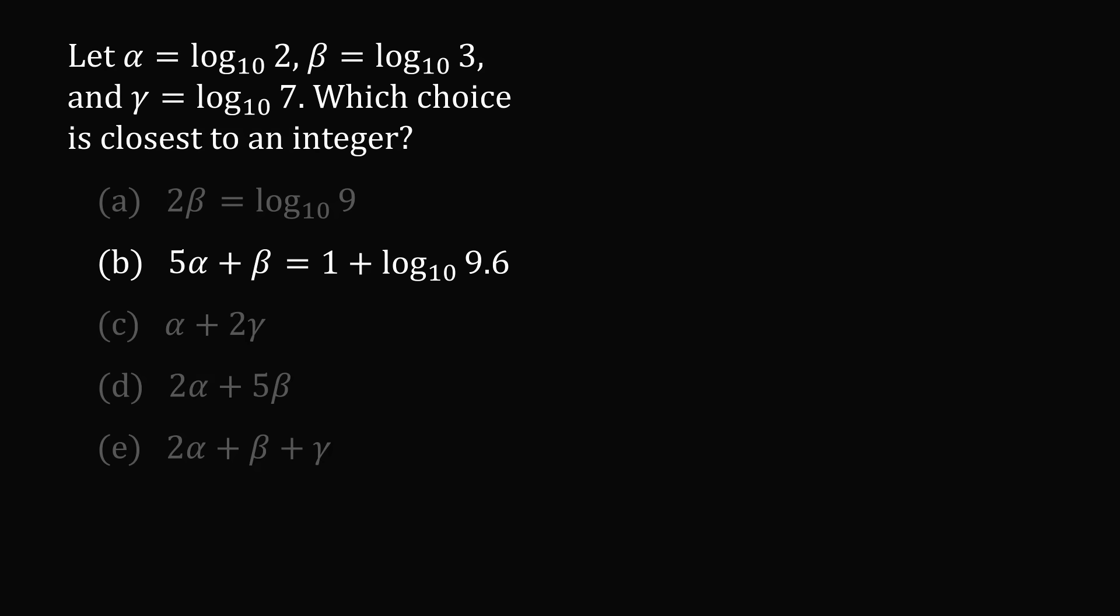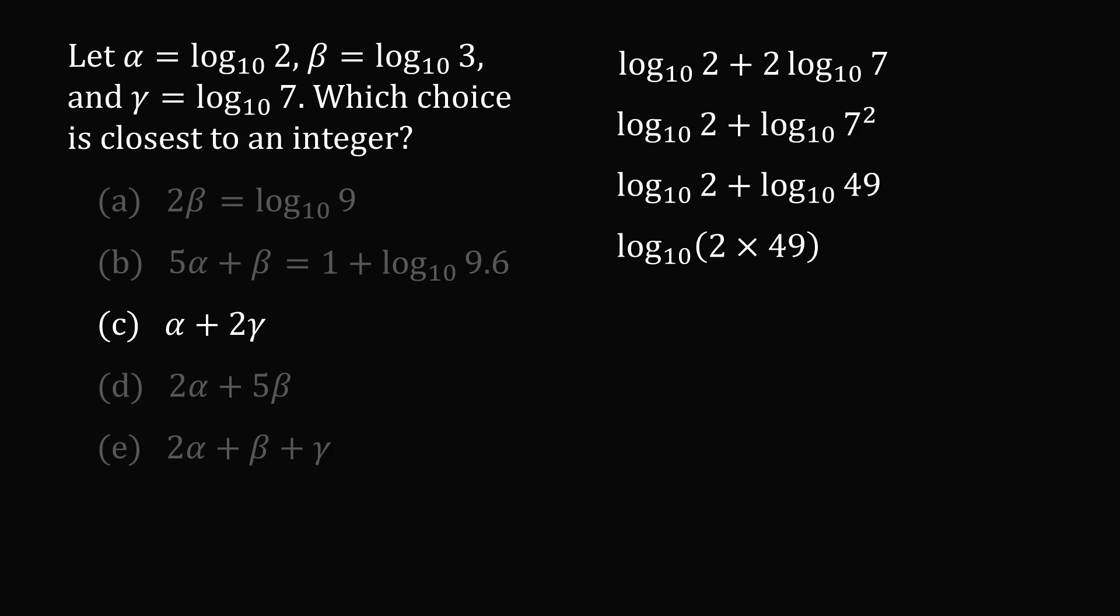Let's do the same thing for answer choice C. We can substitute in for alpha and gamma. We can then use the rules of the logarithms. So we'll bring this exponent up. Then 7 squared is 49. We can now bring this into one term of log base 10 of 2 multiplied by 49. This is log base 10 of 98.